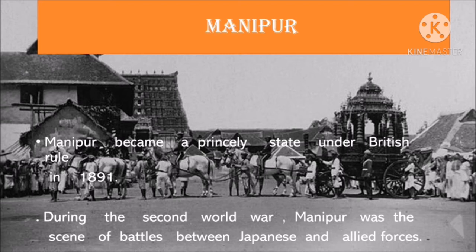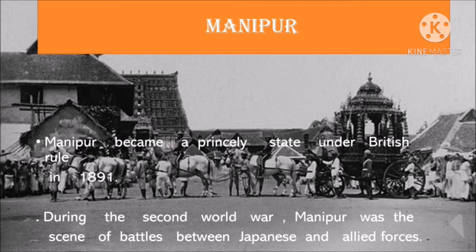History of Manipur: Manipur became a princely state under British rule in 1891, the last of the independent states to be incorporated into British India. During the Second World War, Manipur was the scene of battles between Japanese and Allied forces. The Japanese were beaten back before the Allies could enter Imphal. This proved to be one of the turning points of the war. The legislative assembly was dissolved and Manipur became part of the Republic of India in October 1949. It was made a union territory in 1956 and a full-fledged state in 1972. Mahirambam Koireng Singh became the first chief minister of Manipur in 1972.